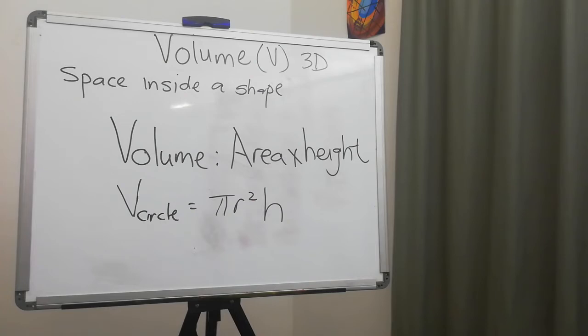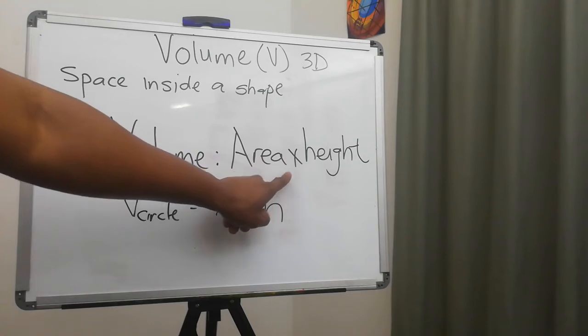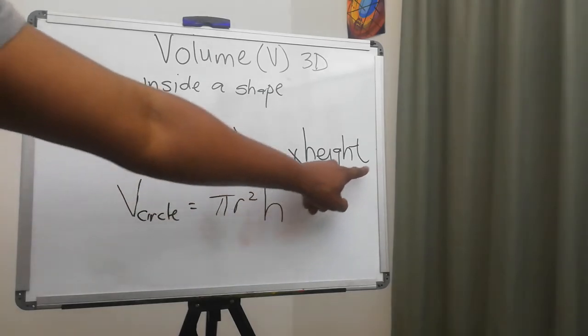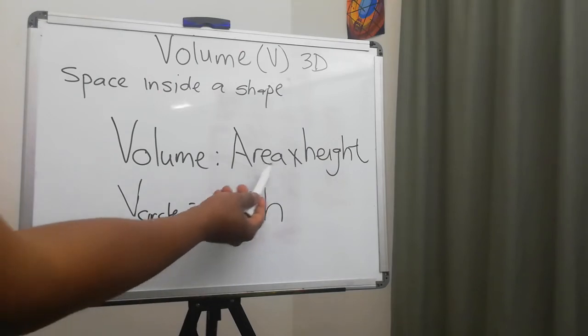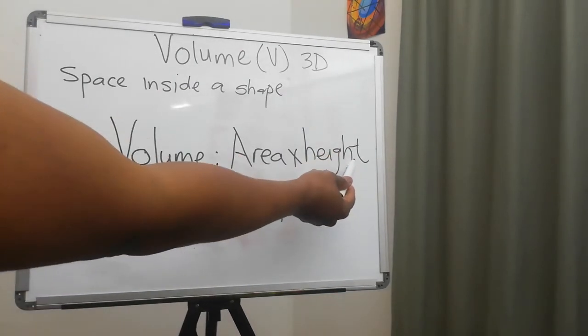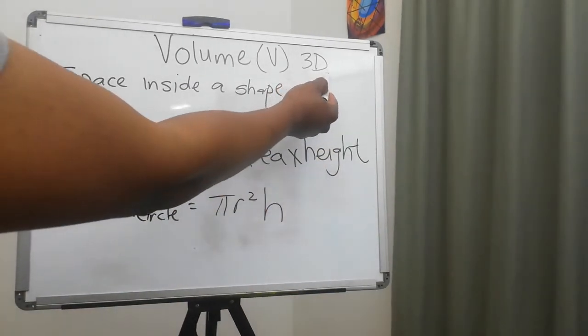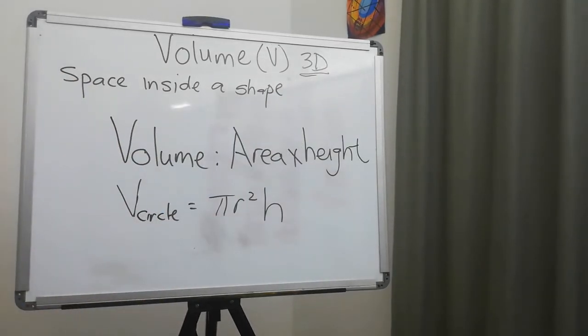When we talk about volume, volume consists of two things: it is an area as well as a height. In our area we know that the answer is going to be squared, times another dimension. That is why I say the volume is a three-dimensional shape, because it consists of a length, breadth, and a height.